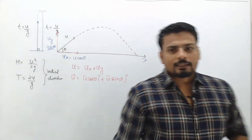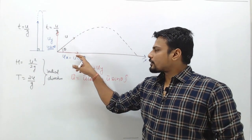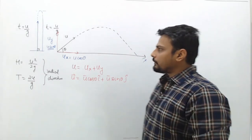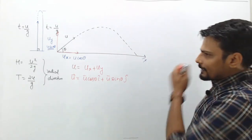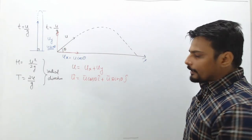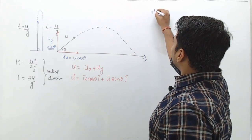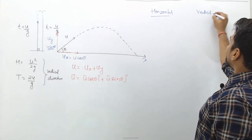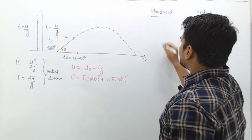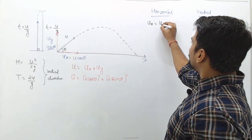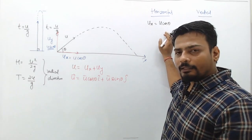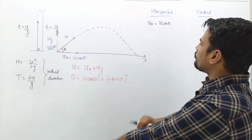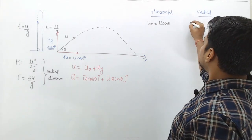I'm taking individual x and y components because I can split this two-dimensional motion and deal with each dimension separately. The entire motion of the projectile can be viewed in two dimensions — horizontal and vertical. The velocity in the x-axis is u·cos(θ) and the velocity in the y-axis is u·sin(θ), where theta could be 30, 37, 40, 53 degrees and so on.